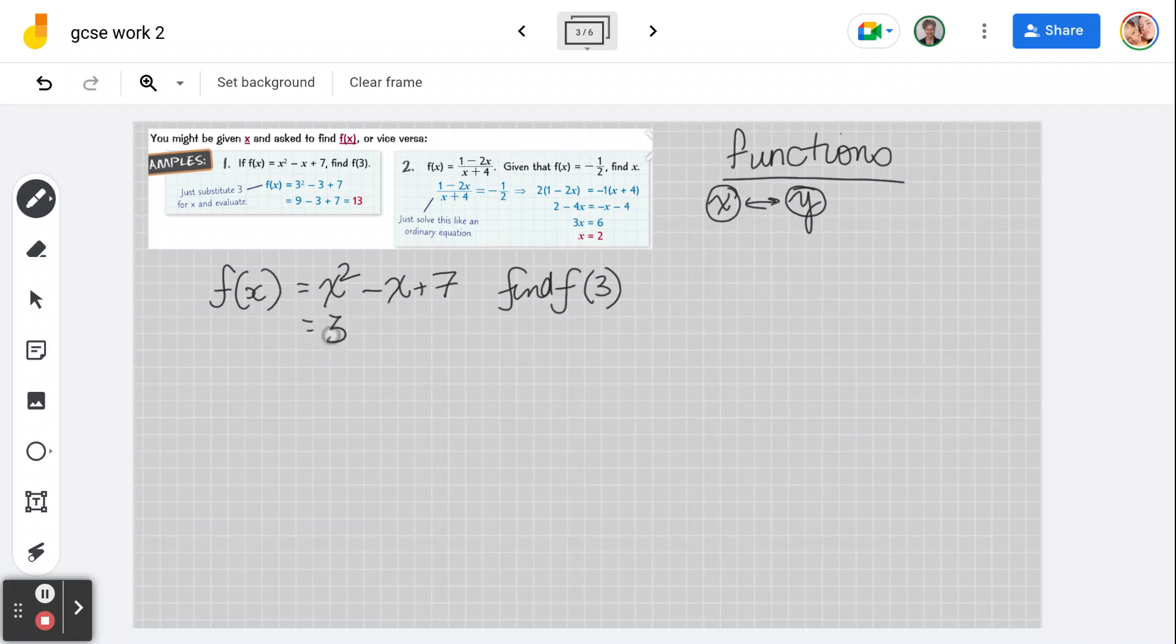If x is 3, then that's 3 squared minus 3 plus 7, which is 9 minus 3 plus 7, which is 13. That's what that function is. Okay, let's look at number 2.